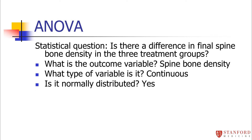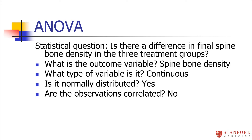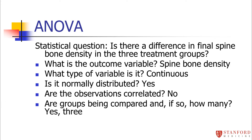Of course, you would need to do some legwork to figure out if it was normally distributed, but you'll just have to trust me that I tested it and it does follow a normal distribution. Are the observations correlated? No, we have three independent groups. How many groups are we comparing? We're comparing three groups, so a t-test is going to be insufficient — that's why we're going to need a one-way ANOVA.